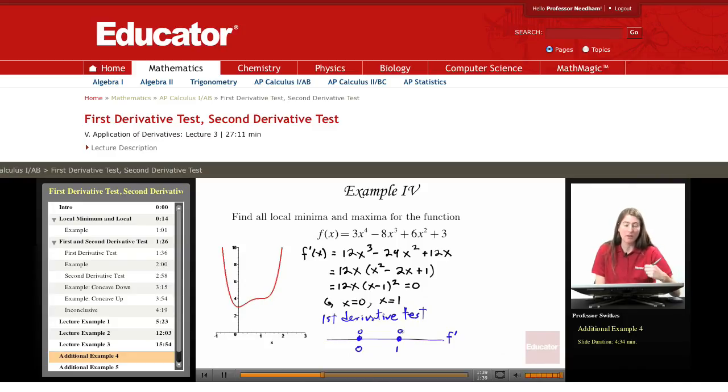And I'll look at a test point in each. So for example, f prime of negative 1 would be 12 times negative 1 times negative 1 minus 1 quantity squared, which is negative. f prime of 0.5 would be 12 times 0.5 times 0.5 minus 1 quantity squared, which is positive.